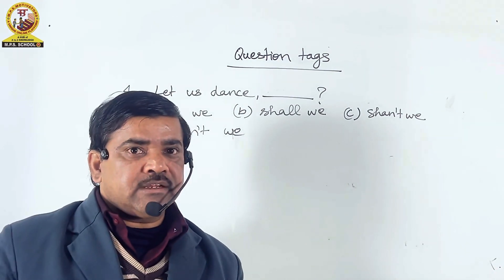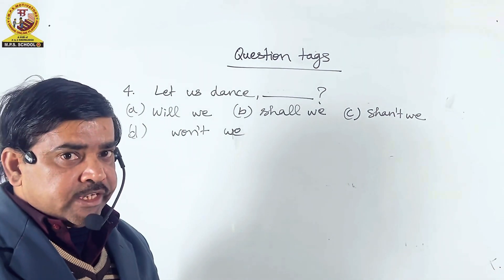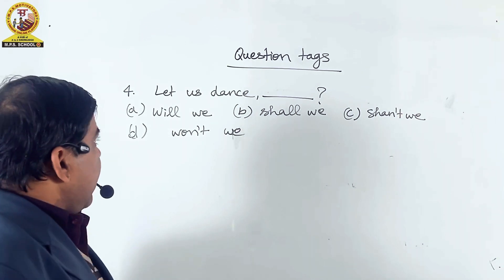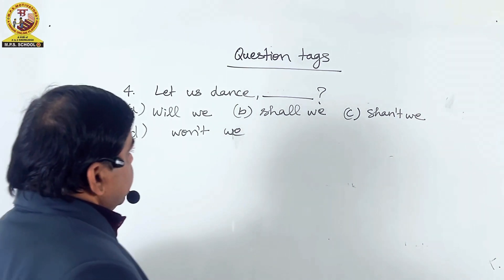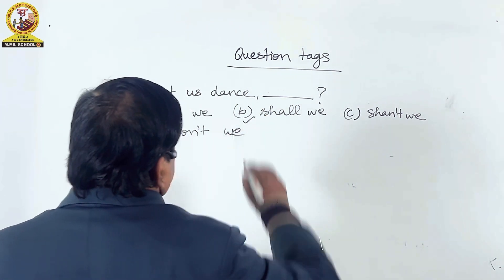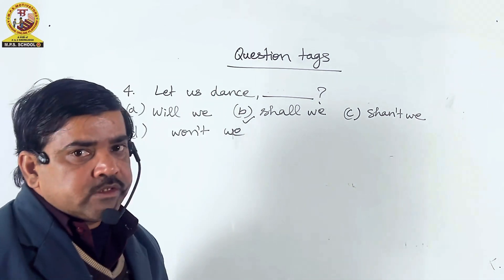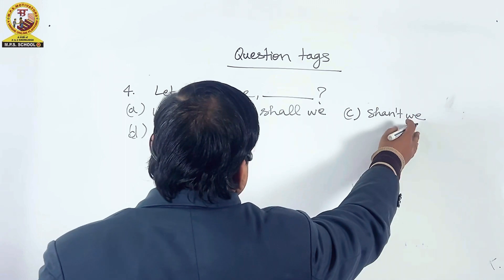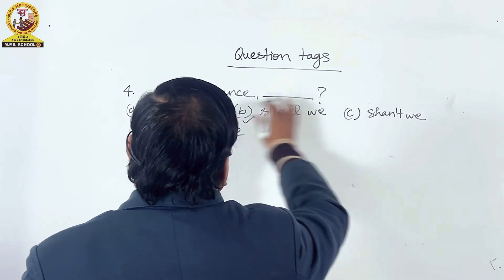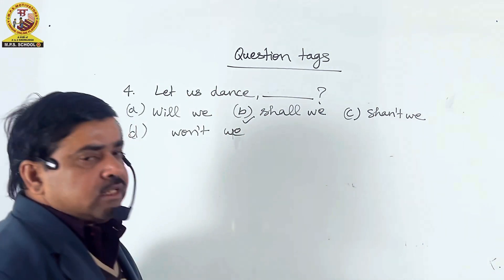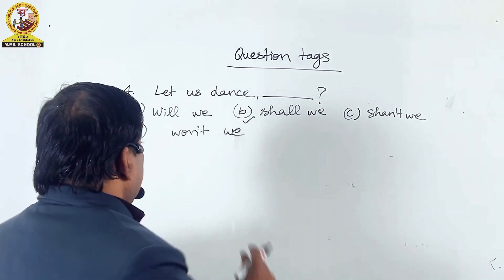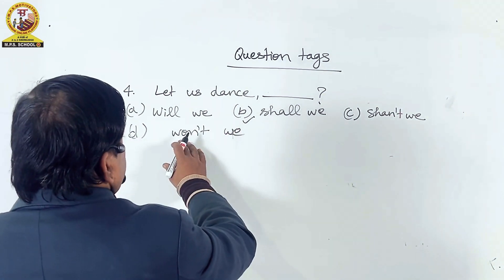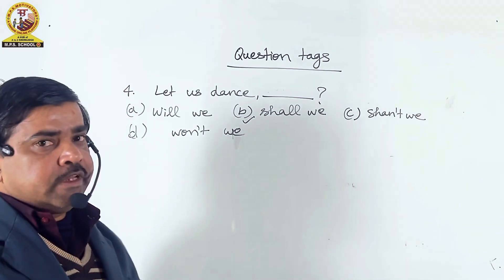Friends, our fourth question is: Let us dance. Here, the question tag of this will be shall we. With we, we don't use we. And with we, we don't use sent when the statement is let us dance. And with we, we don't use want. So the right option is shall we.